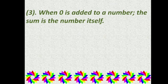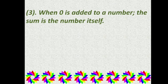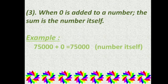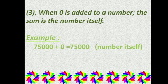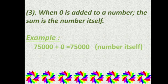Property 3: When 0 is added to a number, the sum is the number itself. For example, 75000 plus 0 equals 75000. This means if we add 0 to any number, we get the same number. Thank you.